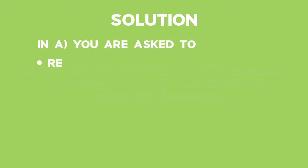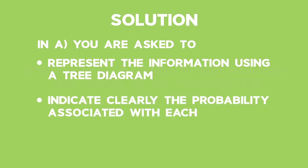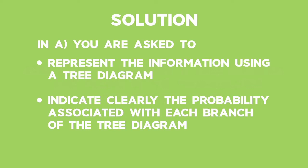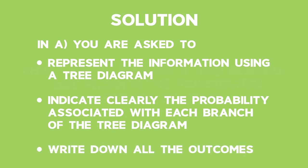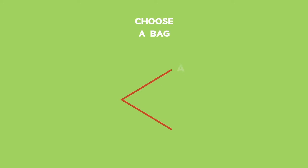For Part A, we are asked to represent the information using a tree diagram, clearly indicating the probability associated with each branch and writing down all the outcomes. We start by drawing a tree diagram and filling in the probabilities along the branches. Step 1: start with two branches representing Bag A and Bag B. The probability of choosing Bag A is 1 out of 2 and the probability of choosing Bag B is also 1 out of 2.